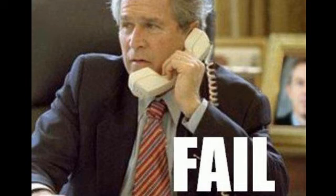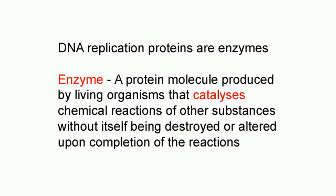This is why MPH85 completely fails in his arguments. He talks about DNA replication proteins that are enzymes. An enzyme is a protein molecule produced by living organisms that catalyzes chemical reactions — what this means is that they make a chemical reaction happen faster.